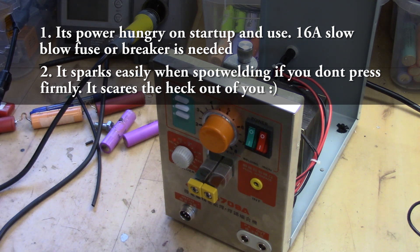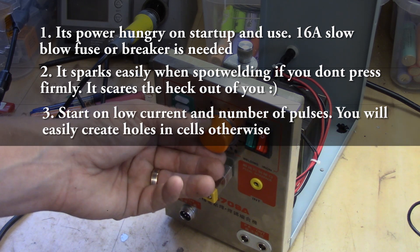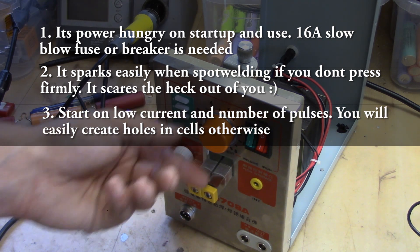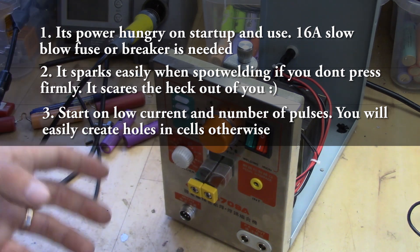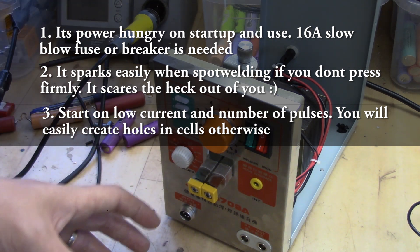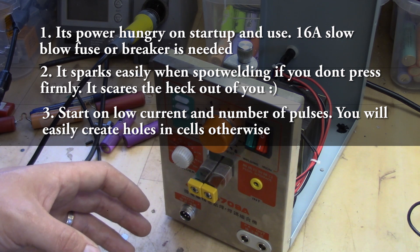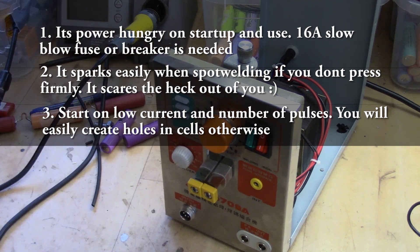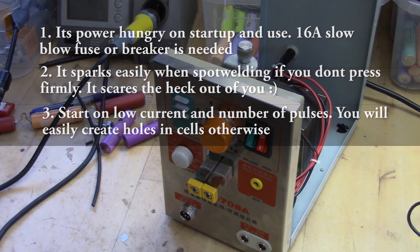Third, when spot welding cells for instance, start low and go upwards. Because if you go too high from the beginning, you will easily weld through or make holes in the cell. So do not start on 8 pulses and on 7, because then you will have a big huge hole in the cell. Start low and go up.